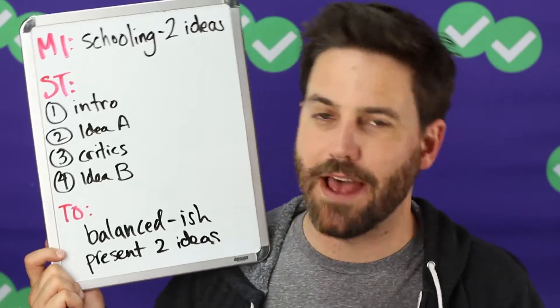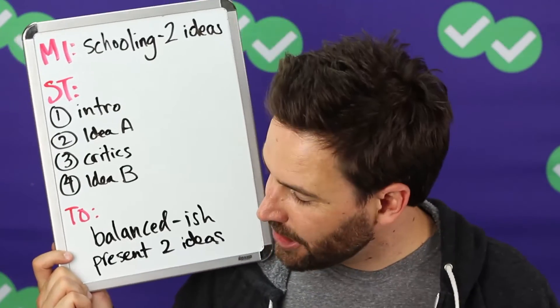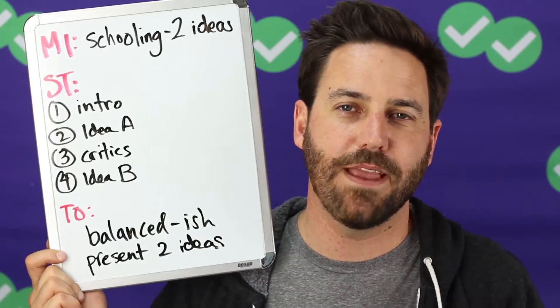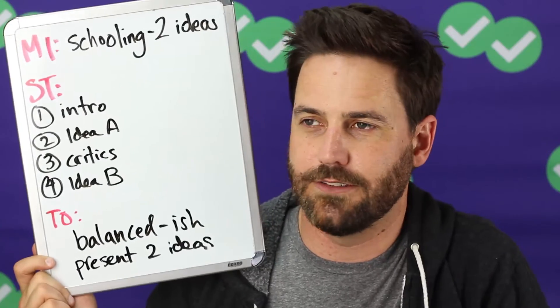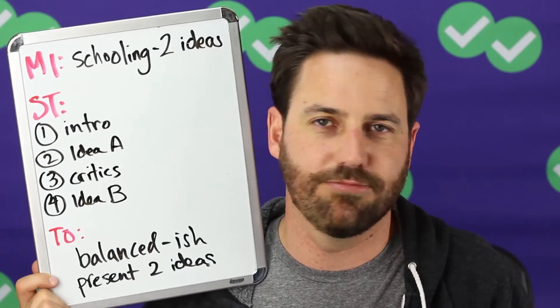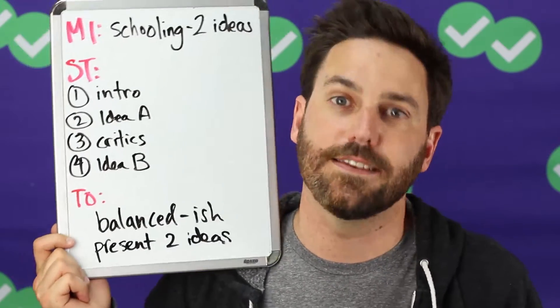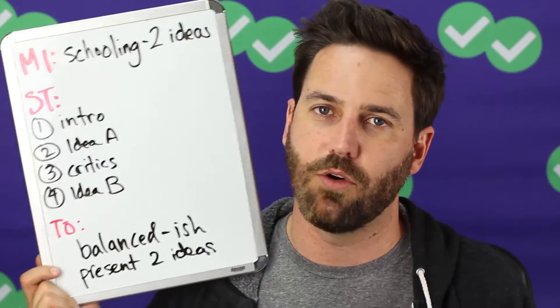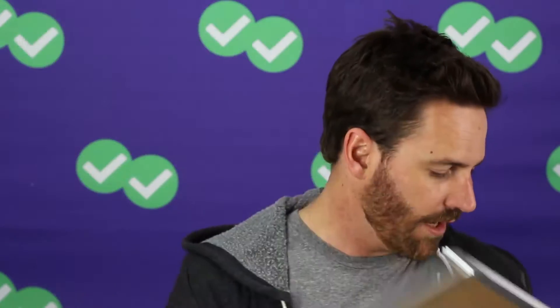The fourth paragraph is all about theory B. The tone is balanced — the author is generally unbiased, just presenting the two theories without arguing for one or the other.